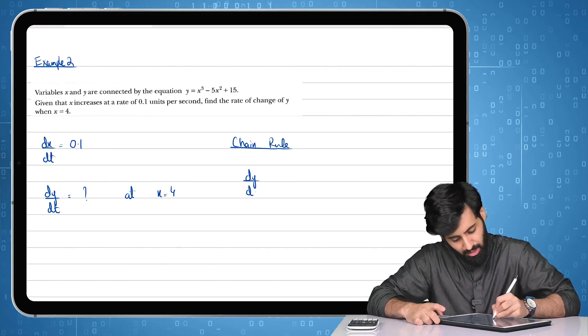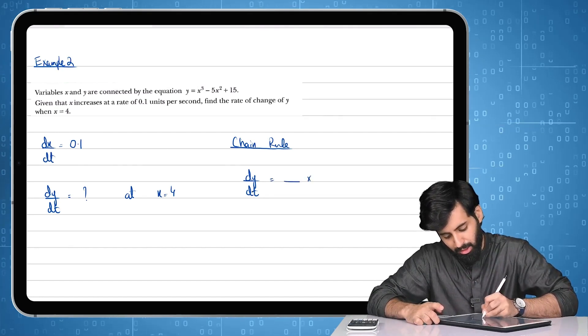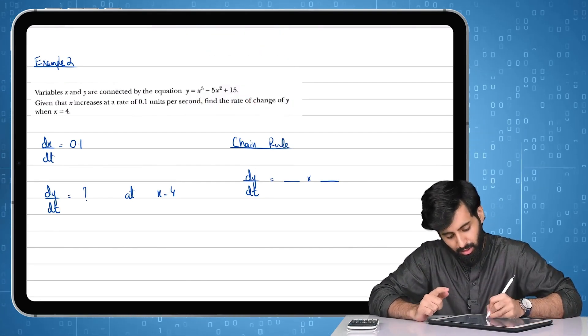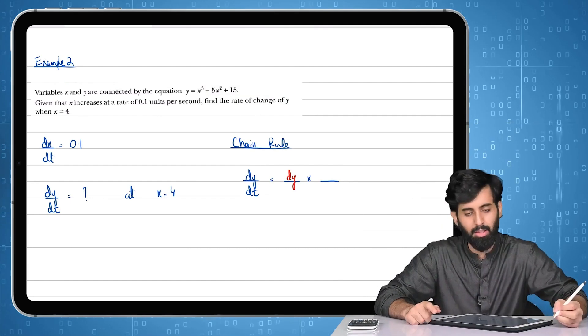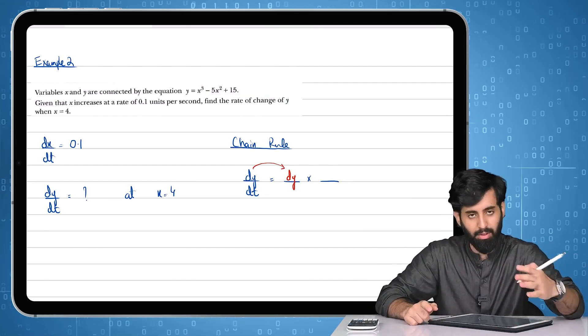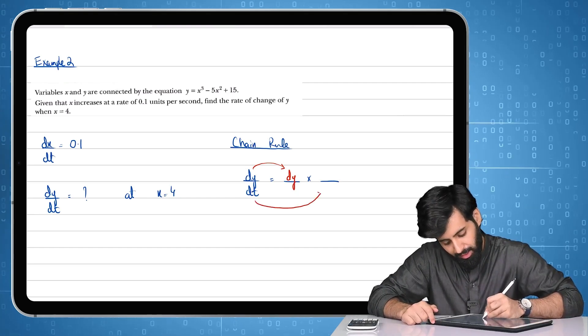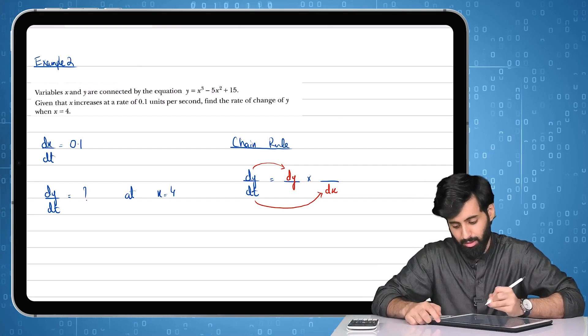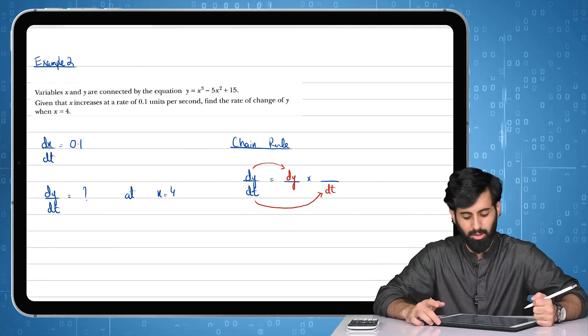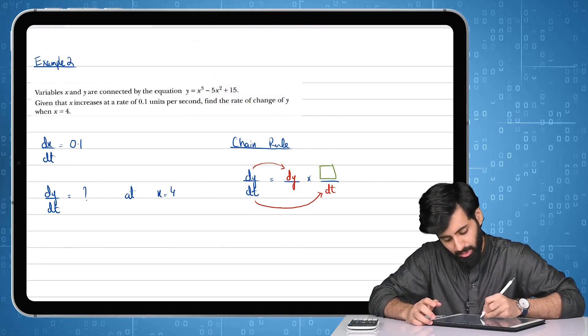What you have to find out is dy/dt. First thing you should do is write that down. Let me write this again, dy/dt. Now this is going to come as a result of multiplying two fractions. The numerator of the first fraction is going to be the same as the numerator of the fraction that you have before the equals to sign, and the denominator of the second fraction is going to be the same as the denominator of the fraction that you have before the equals to sign. Now what you're going to place over here is going to be the same.